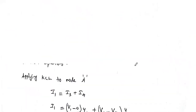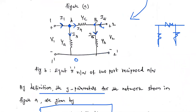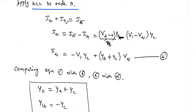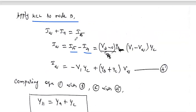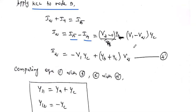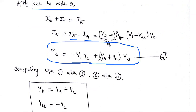Similarly, apply KCL to node B. At node B, I2 and I4 are incoming currents and I5 is an outgoing current, so I2 + I4 = I5. We need to derive I2 in terms of V1 and V2: I2 = I5 − I4. Substituting I5 = (V2 − 0)·Y-B and I4 = (V1 − V2)·Y-C, then rearranging and collecting V1 and V2 terms, we get the I2 equation in terms of V1 and V2. This is equation number 4.